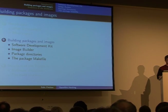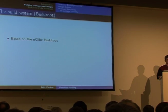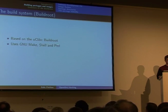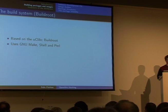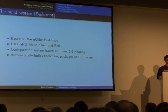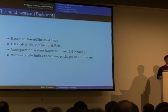Now to the main part of my presentation — the developing process. Our build system, which we refer to as build root, is based on the uClinux build root. It deviated a lot from that inherited code base and is mainly written in GNU Make, with some shell and Perl scripts to make things easier. It uses a configuration system based on the kernel config of Linux 2.6. The main feature is that it automatically builds toolchain packages and firmware, so you don't need to worry about downloading the single components that make up a whole Linux system.